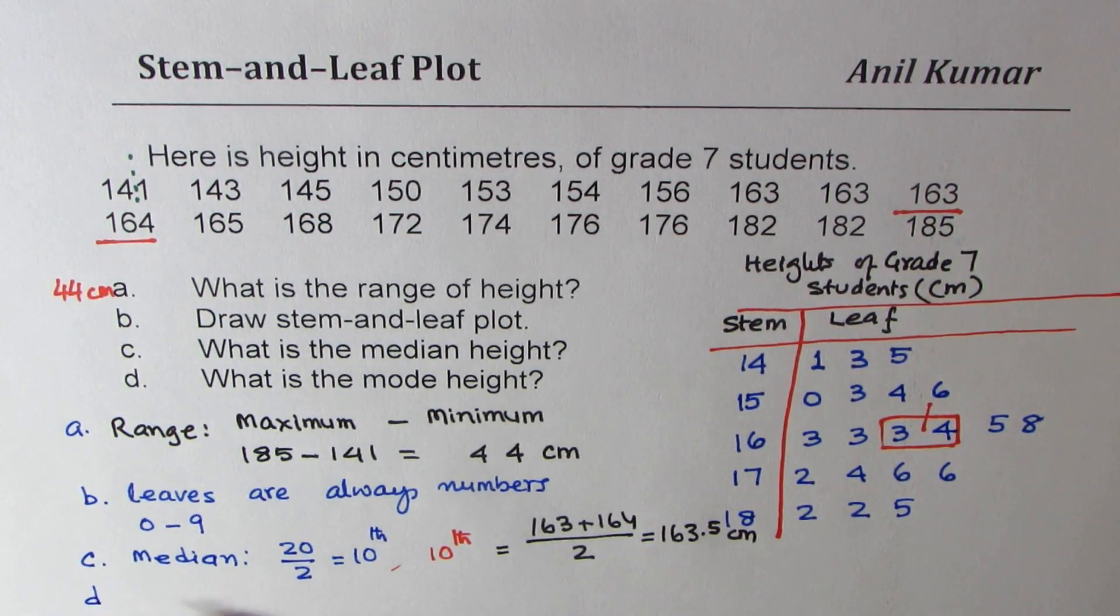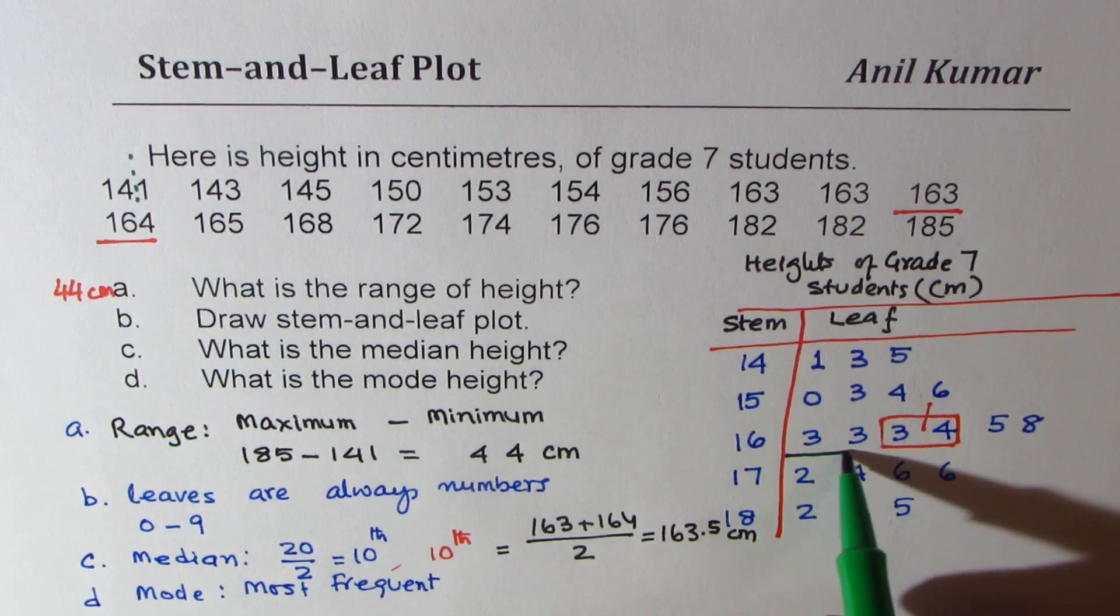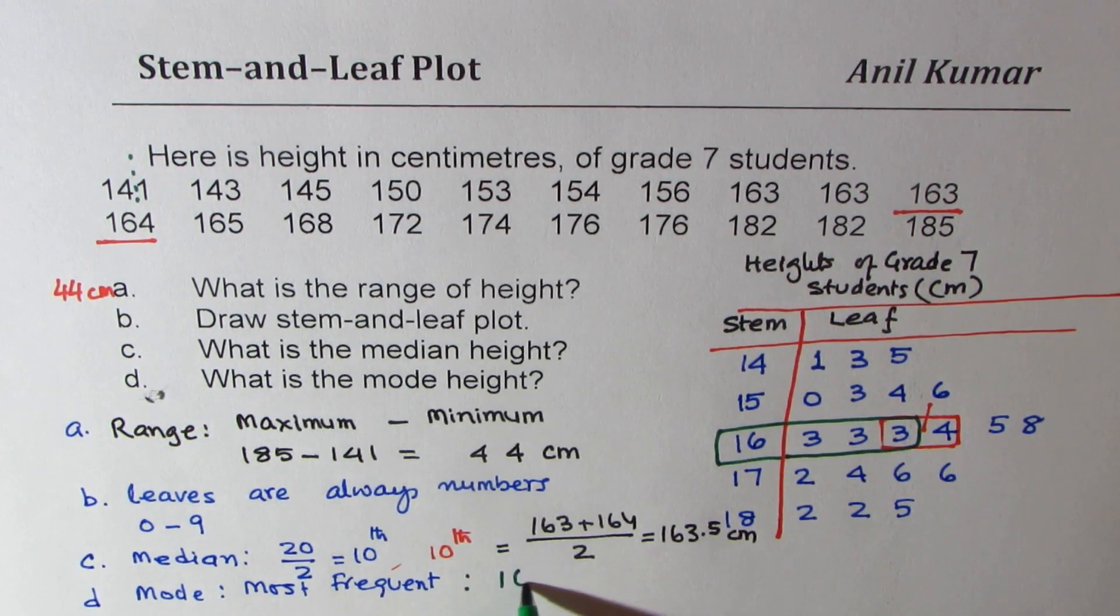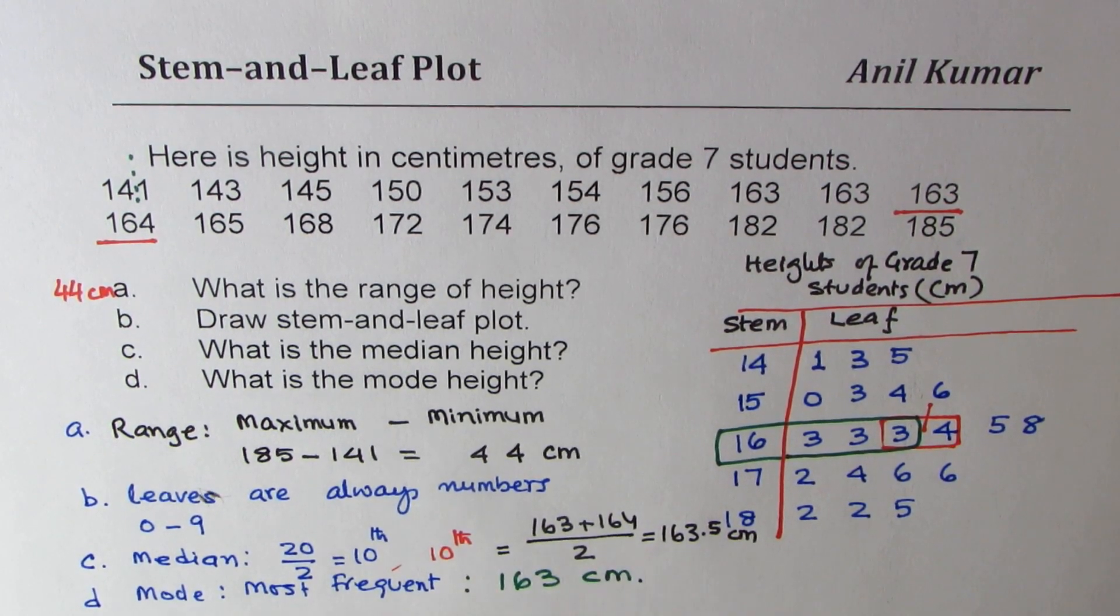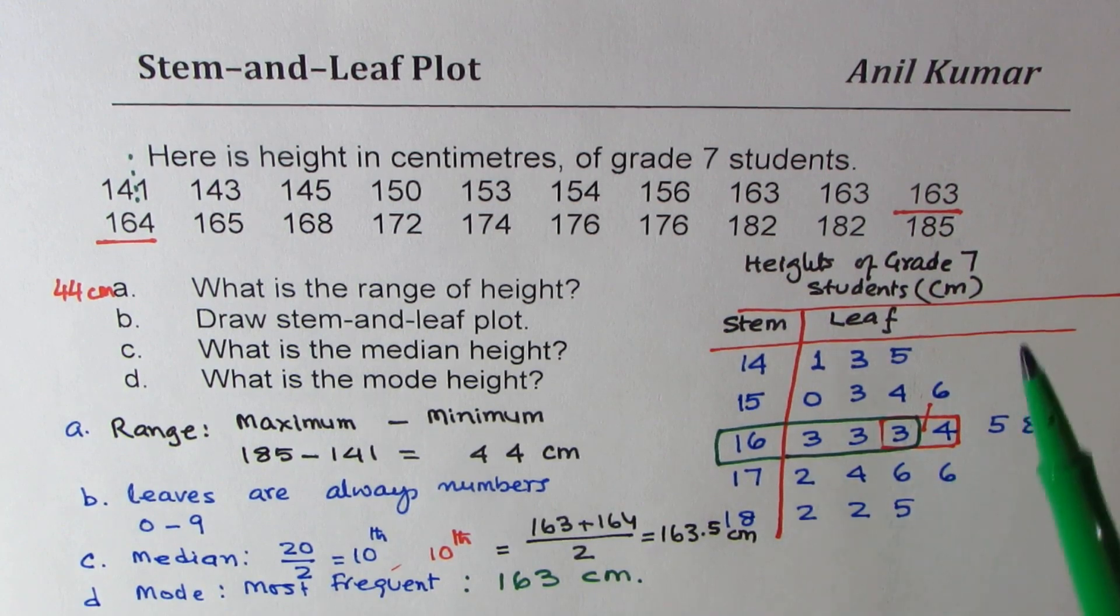Now part D is to find mode height. Mode is most frequent, so what appears maximum number of times. So you'll see these 3's appear maximum number of times. So the mode is 163 centimeters. You can note from here, the mode is always the data point, but median could be the information which is not given. Sometimes we find the average, especially when we have even number of data elements.